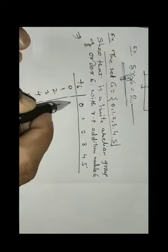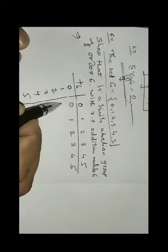We fill in the table by adding elements and applying modulo 6. For example: 0+0=0, 0+1=1, 0+2=2, 0+3=3, 0+4=4, 0+5=5. Then 1+0=1, 1+1=2, 1+2=3, 1+3=4, 1+4=5, and 1+5=6; dividing 6 by 6 gives remainder 0. Continuing: 2+0=2, 2+1=3, 2+2=4, 2+3=5, 2+4=6 giving remainder 0, and 2+5=7 giving remainder 1.